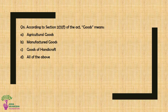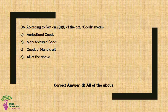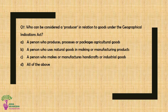Question No. 6: According to Section 21F of the act, 'Goods' means — Option A: Agricultural Goods, Option B: Manufactured Goods, Option C: Goods of Handicraft, or Option D: All of the above. The correct answer is Option D — All of the above.